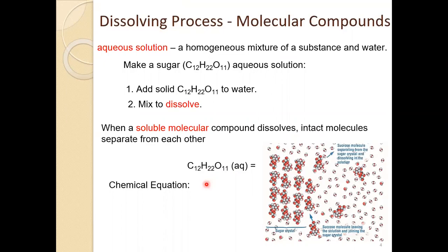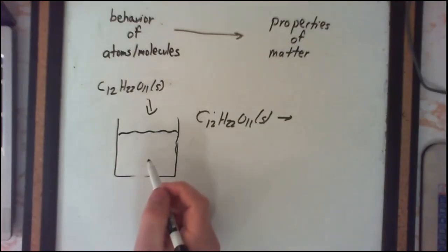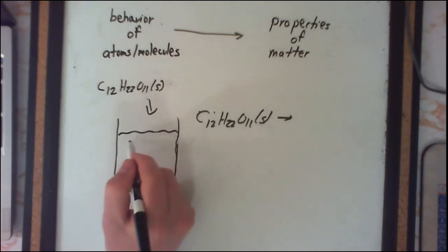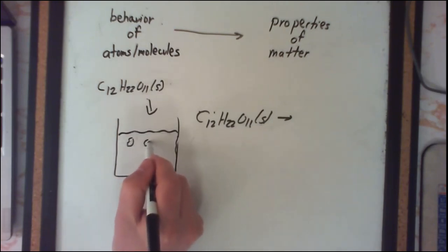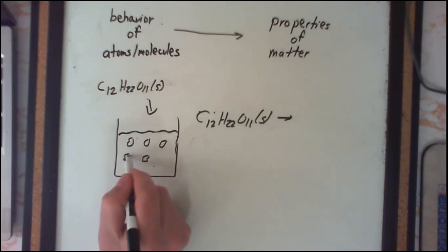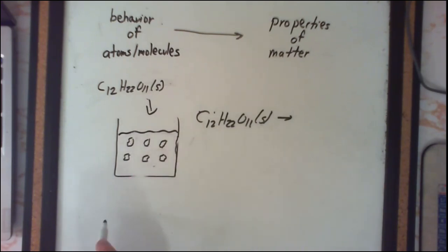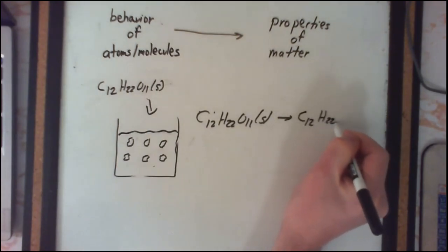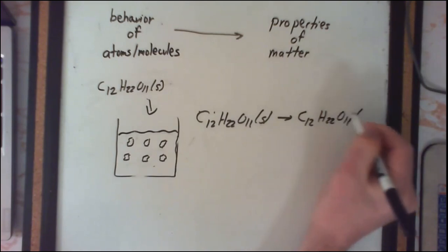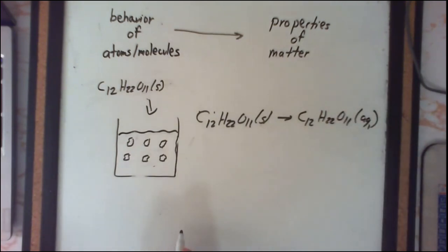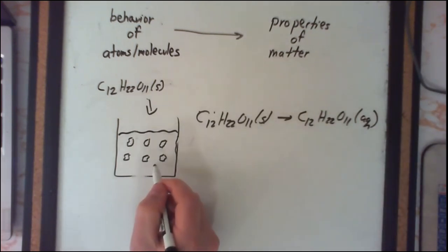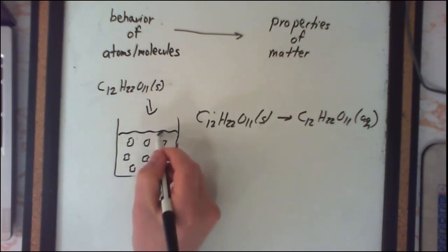When a molecular compound dissolves, the intact molecules separate from one another. So the molecules are still intact — just one molecule separates itself from another molecule. To represent sugar in aqueous solution with a chemical equation, we simply rewrite the formula C12H22O11 but now in the aqueous state, where the notation implies the molecules are now separated from one another but otherwise remain intact.